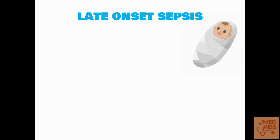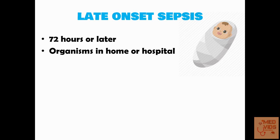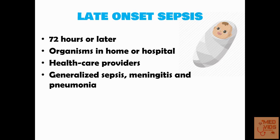Late onset sepsis is that which occurs at 72 hours or later after the child is born. Late onset sepsis is acquired from the organisms present in the home or hospital in which the child is kept. Healthcare providers are often involved in transmission of organisms responsible for late onset sepsis to the neonates. Late onset sepsis, contrary to early onset sepsis, can manifest as generalized sepsis, meningitis and pneumonia.